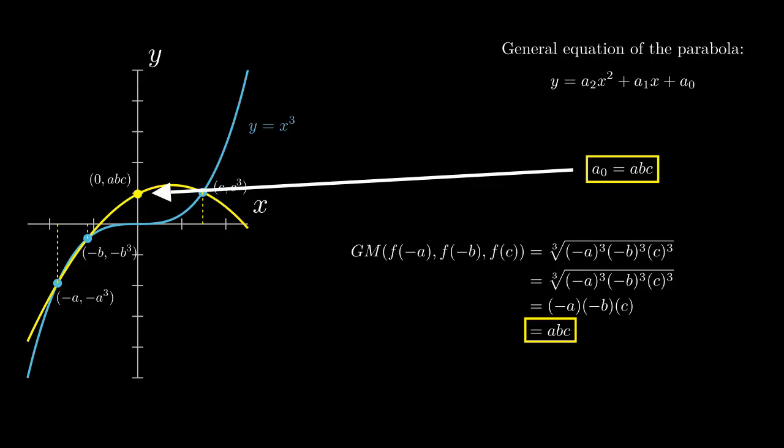When we take the geometric mean of the y-coordinates used to find the parabola, we get that the geometric mean is the y-intercept. And although we didn't prove this for every positive integer value of n, the y-intercept will be the geometric mean of the x-coordinates at which both graphs intersect.